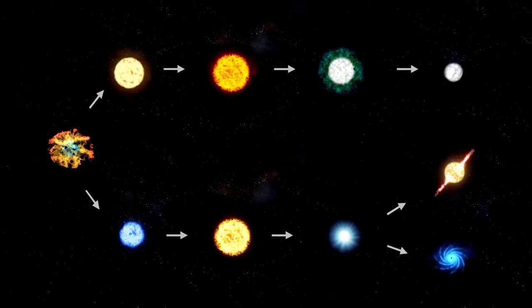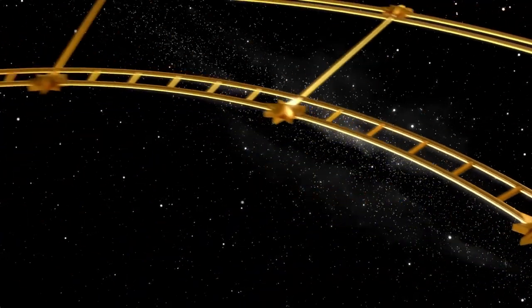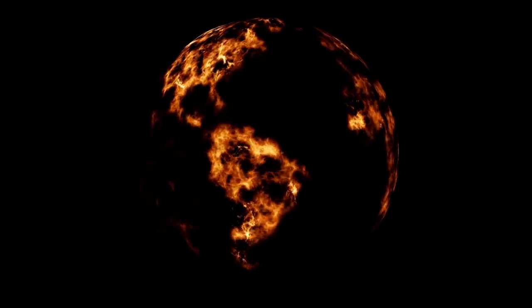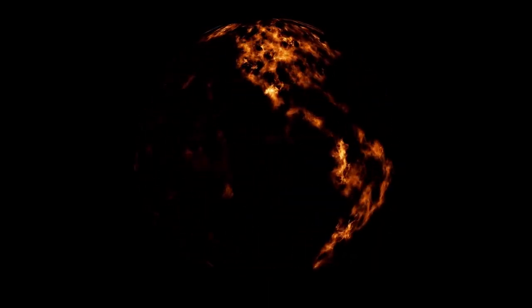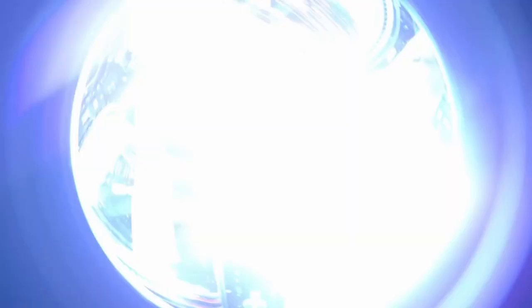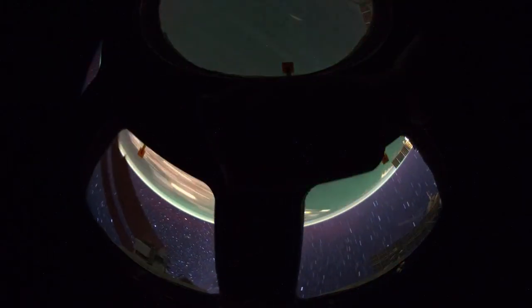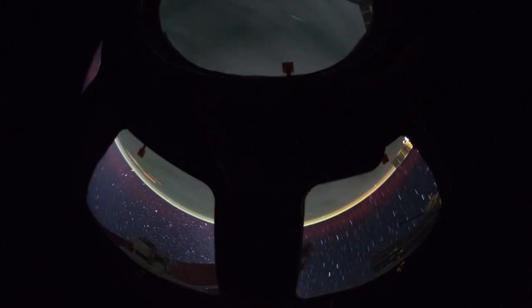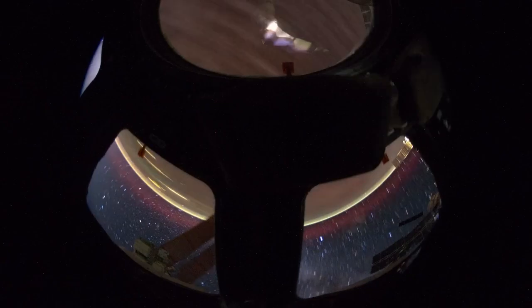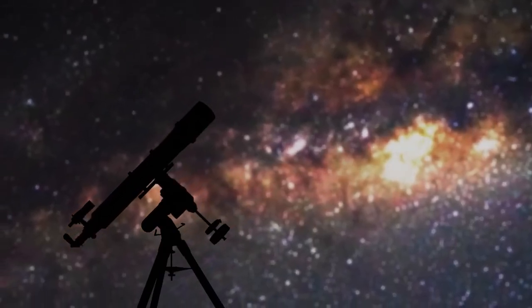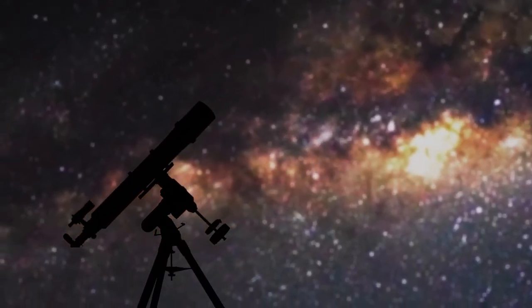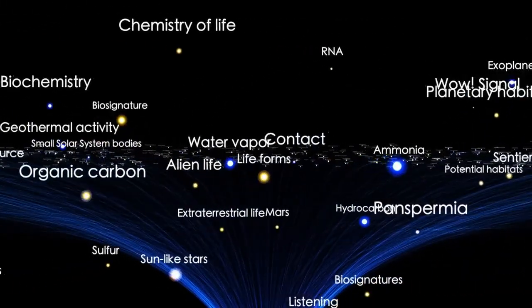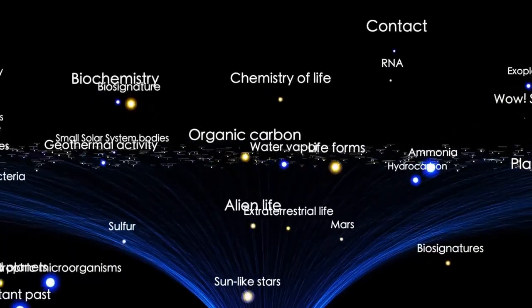But as it drifted closer, 3.I Atlas began to misbehave. Its brightening faltered, dimmed, then flared again unpredictably. The red hue deepened, pulsing faintly like a heartbeat. A comet that flickers like that is unstable, fragile, doomed to fracture under the stress of sunlight and gravity. And then, just as anticipation reached its peak, it happened. The light splintered. The great comet broke apart.